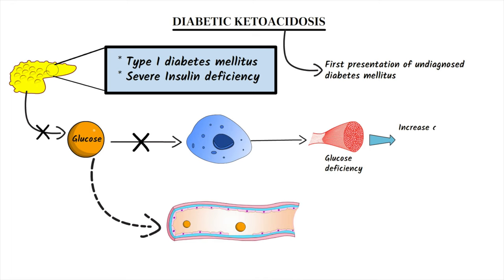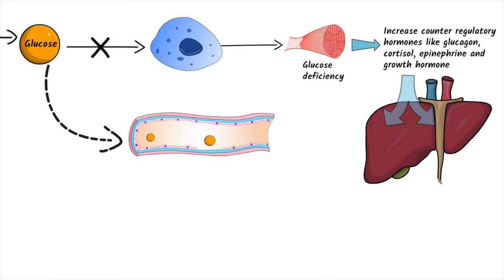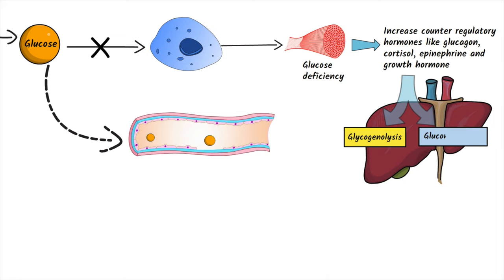That stimulates the secretion of counter-regulatory hormones like glucagon, cortisol, epinephrine, and growth hormone. They assume that the body needs more glucose as an energy source, so they increase blood glucose level. This is done by converting stored glycogen into glucose by glycogenolysis, and also by converting non-carbohydrate sources like protein and amino acids into glucose by gluconeogenesis.